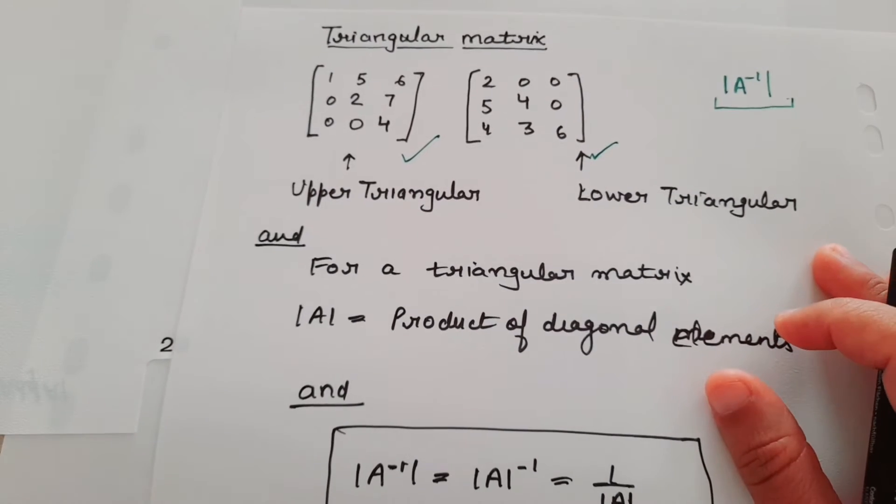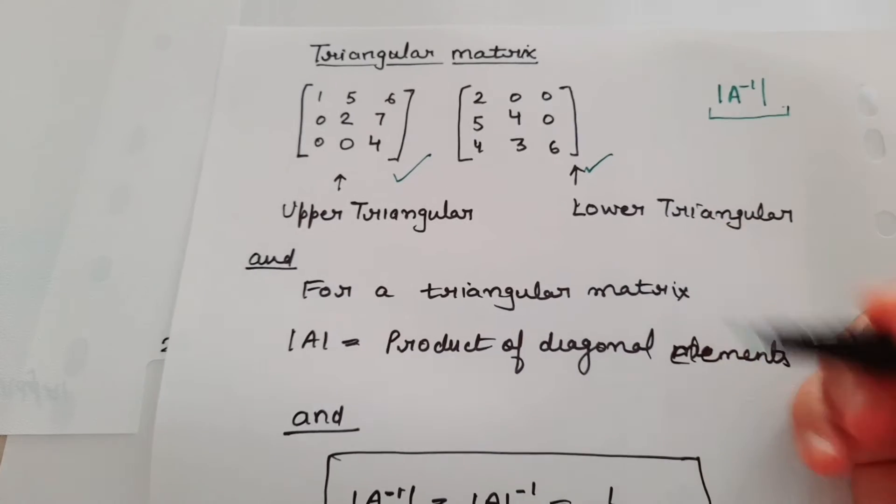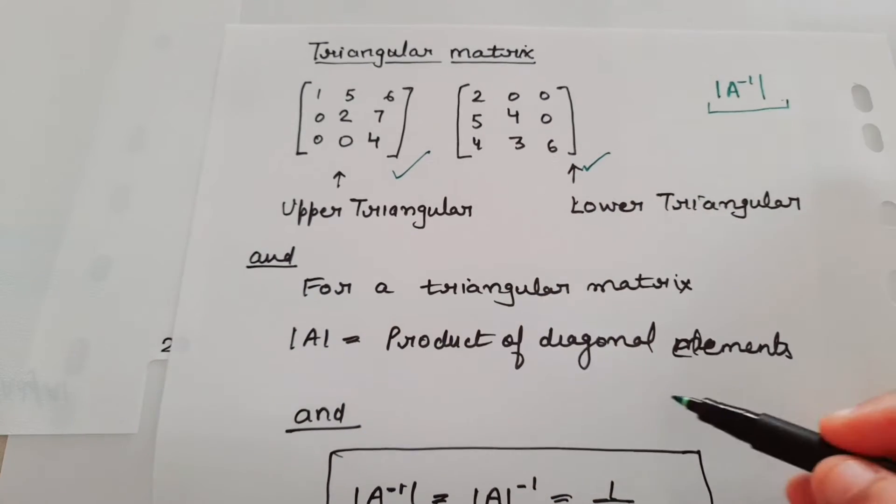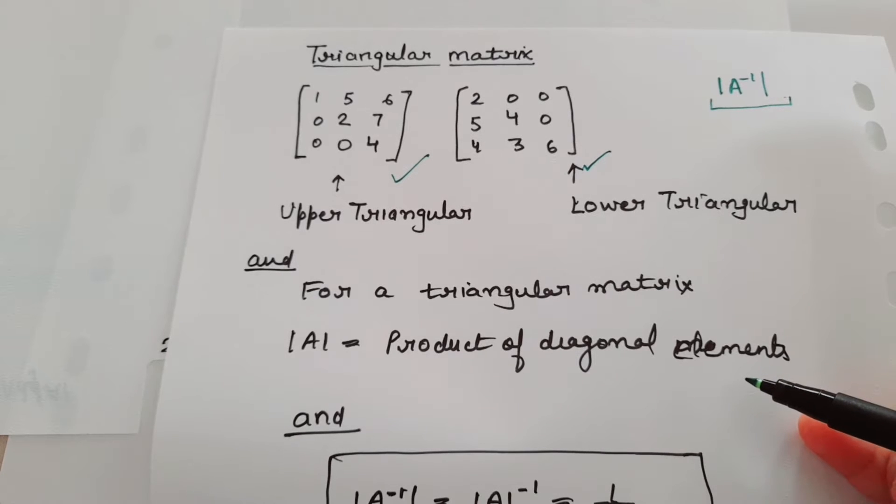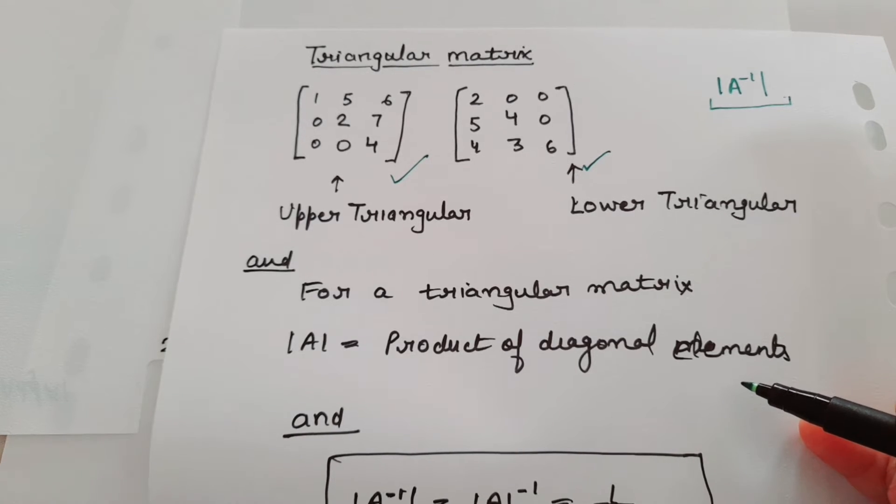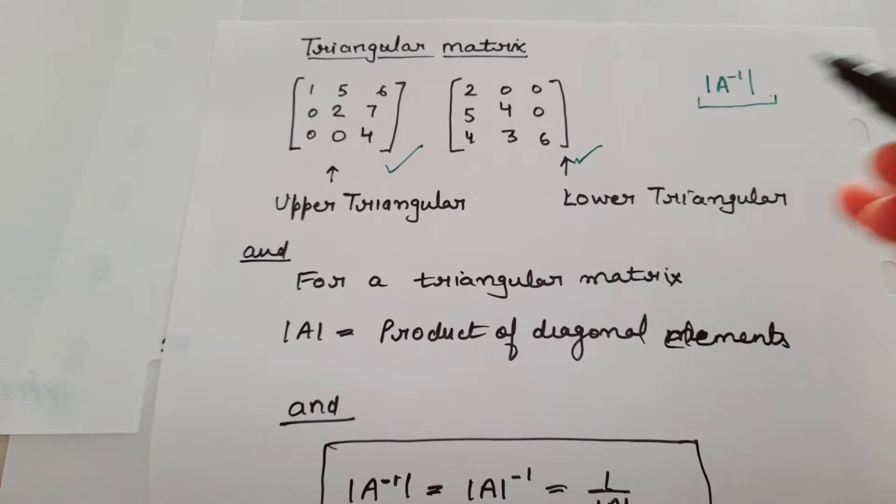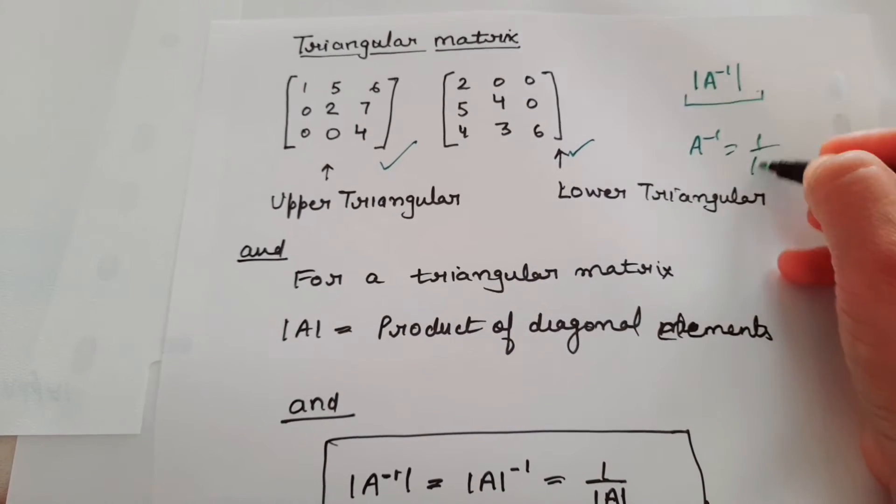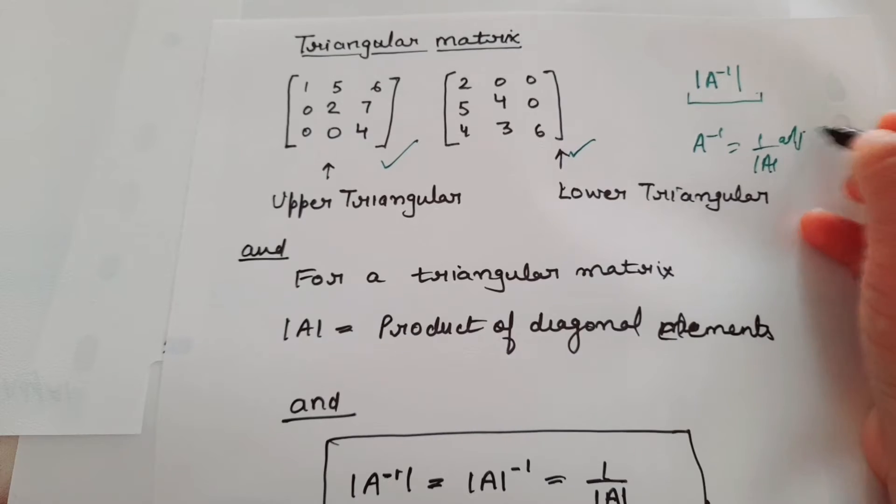And this is the trick that for a triangular matrix, what is determinant of A? Determinant of A is product of diagonal elements. You do not need to find adjoint of A or anything. The formula of A inverse is 1 upon determinant of A adjoint of A.